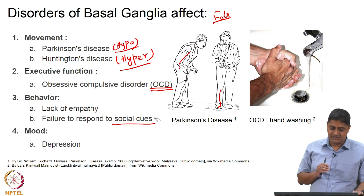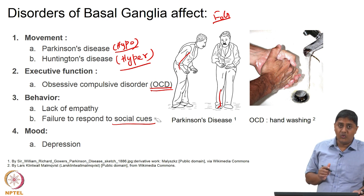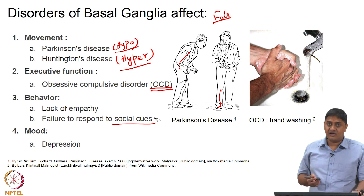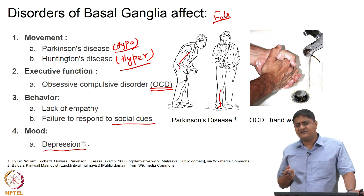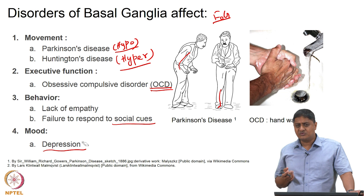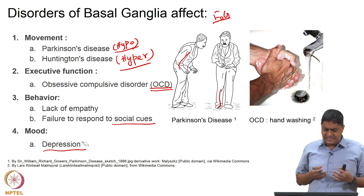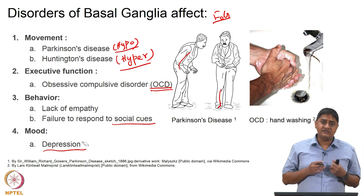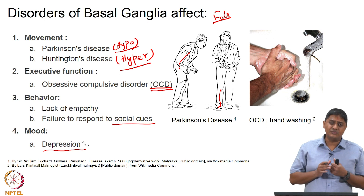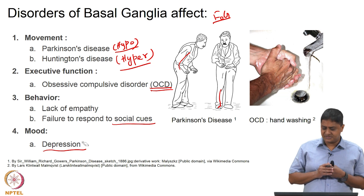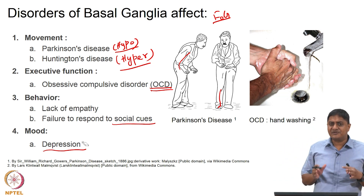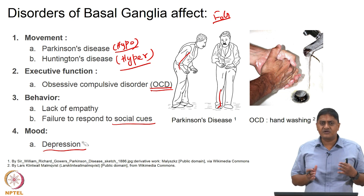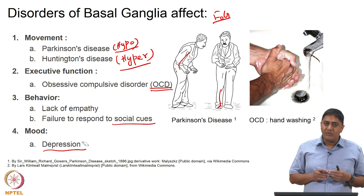These are important behavioral disorders. Then there are mood functions — emotion, motivation, and depression. The exact pathophysiology of depression is not understood; there is a huge need to understand this disorder, why it happens, what the exact pathophysiology is. It is poorly understood. For the purpose of this course, we will focus only on the movement disorders part.